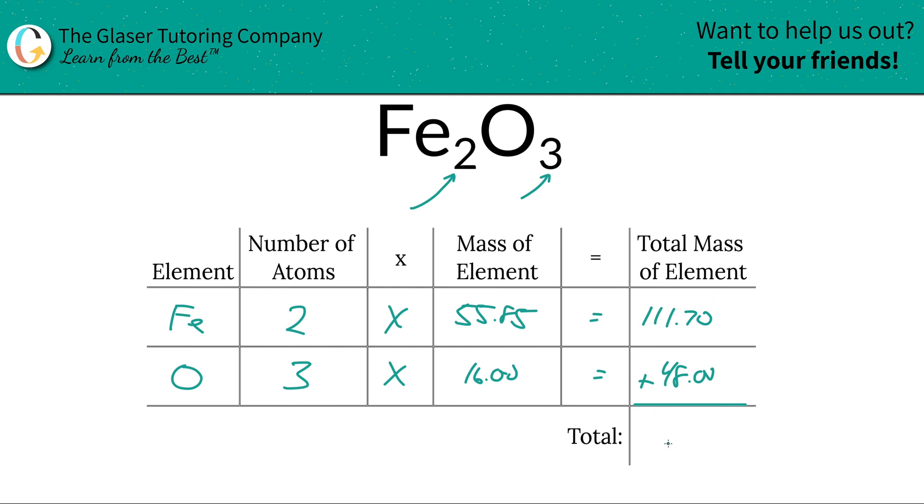And then when we add up the column here, we find the total mass of the entire compound, which is what we want to find. So 159.7. And the units here are in terms of grams per mole because we're finding molar mass.